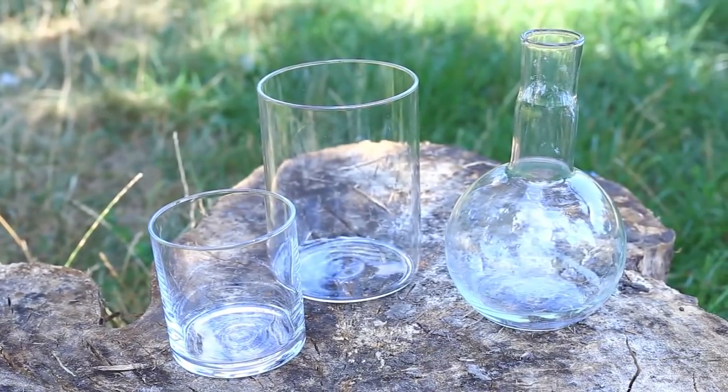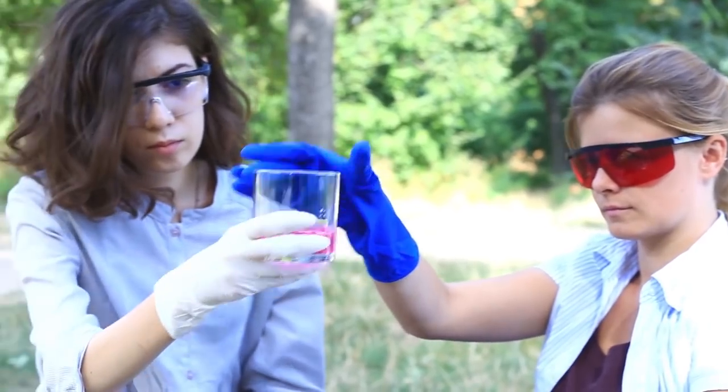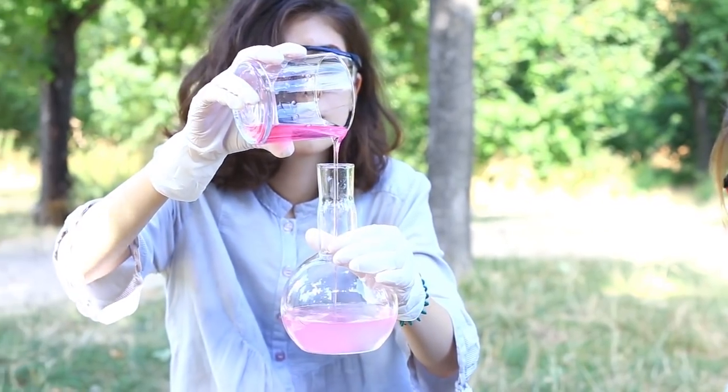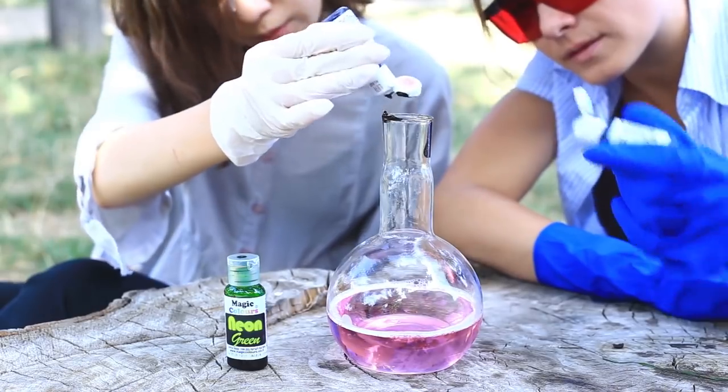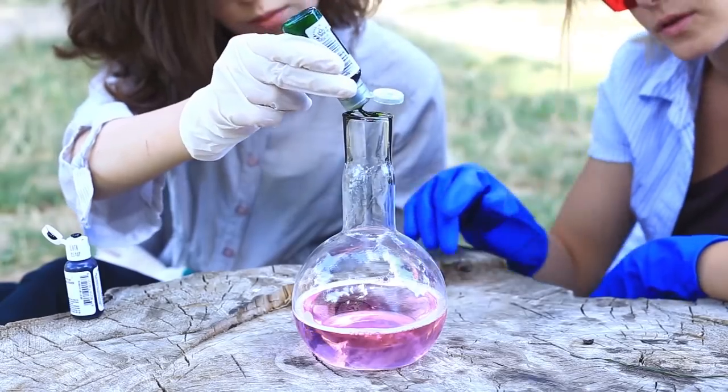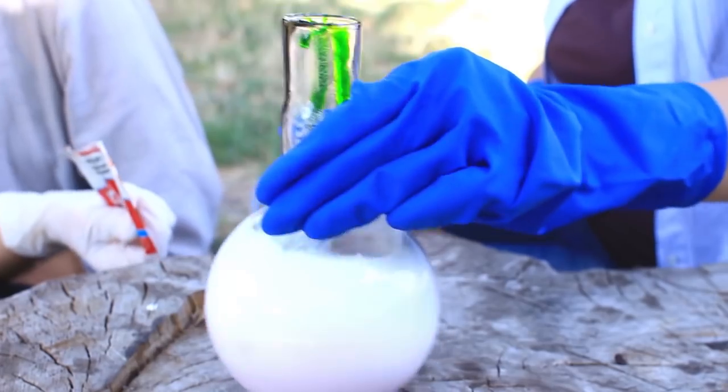We've prepared these flasks. Mix dishwashing soap with 30% hydrogen peroxide. Add several drops of food coloring. Pour active dry yeast and shake.